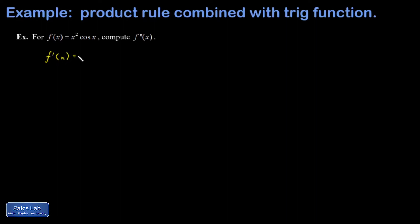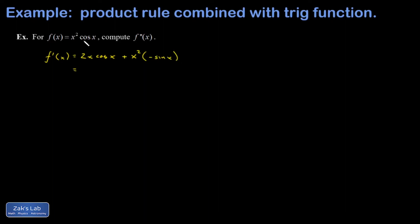For the first derivative, you take the derivative of the first function, which is 2x, leave the second function alone, add to that the first function left alone times the derivative of the second function, which is negative sine x. Clean it up a little bit.